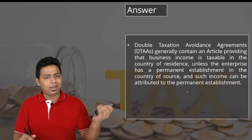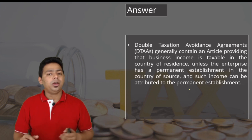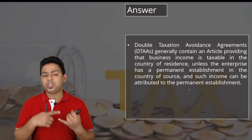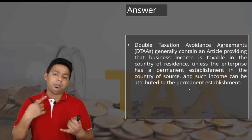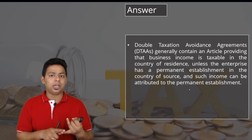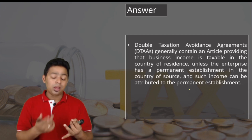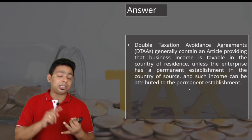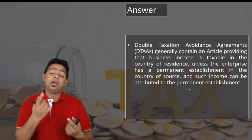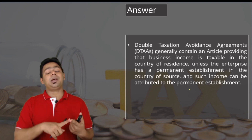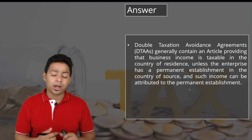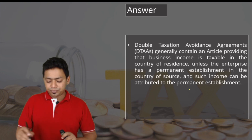You have to write down maximum possible points. First, write about business connection — that is the concept under the Indian Income Tax Act. Then, under DTAA, the permanent establishment concept applies. Only if there is a permanent establishment in India are foreigners' incomes taxable in India. You can mention all those points.